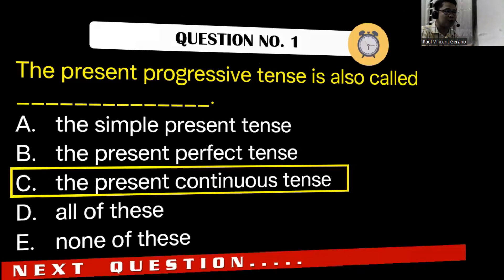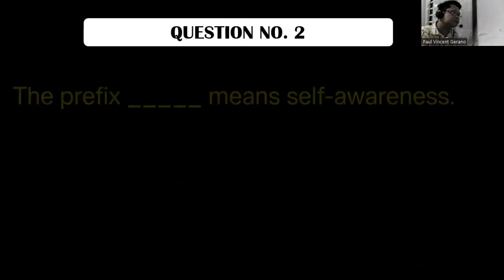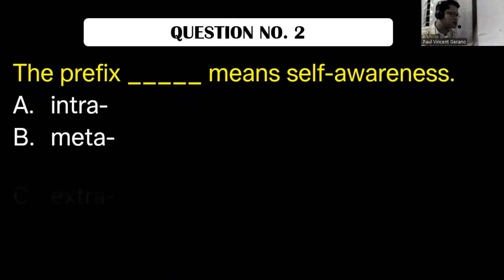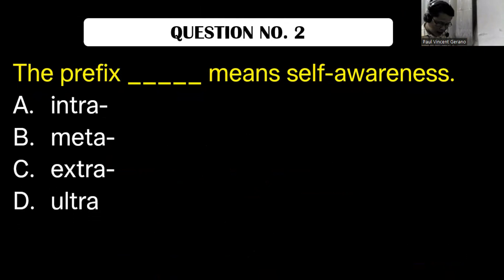Now let's go to question number two. The prefix blank means self-awareness. A, intra. B, meta. C, extra. D, ultra. What is the correct answer?